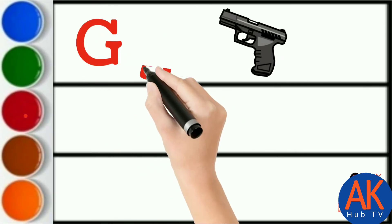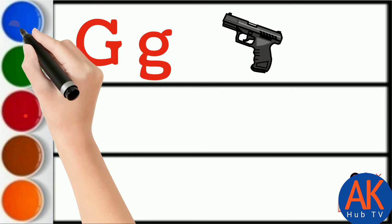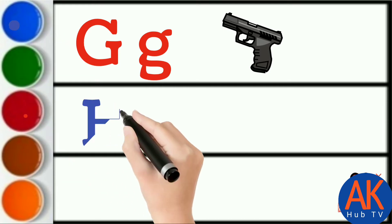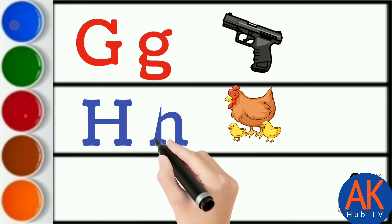Red color G. G for gun. Blue color H. H for hen.